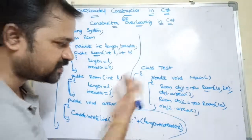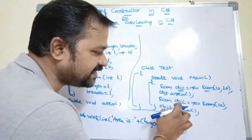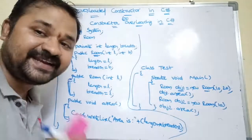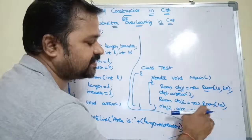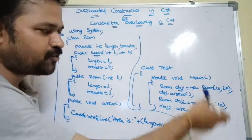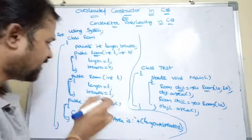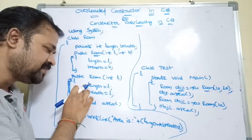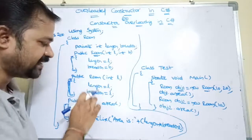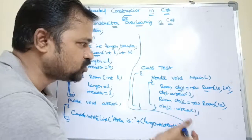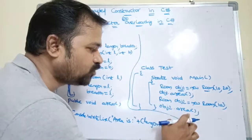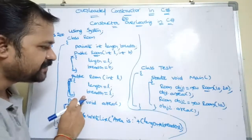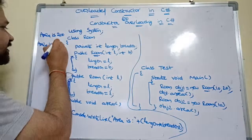Control returns to the main method. The next statement is Room obs2 = new Room(10). Now a constructor which contains only one integer value will be accepted. The control goes to the constructor which accepts only one integer value — l equals 10 — so length becomes 10, breadth becomes 10. Constructor execution is over and control returns to the main method. The next statement is obs2.Area(). Area is 10 into 10, which is 100, so 100 is displayed.